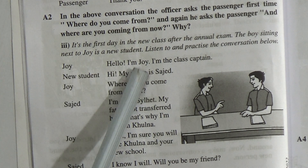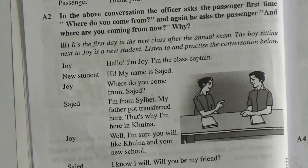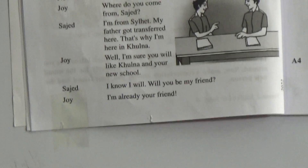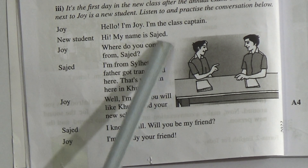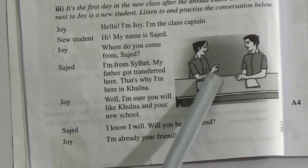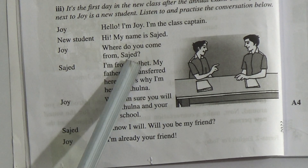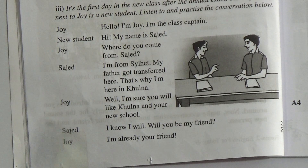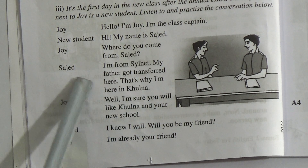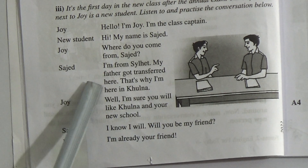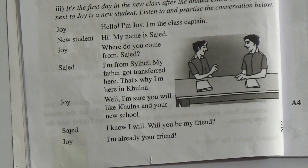Joy: Hello, I am Joy. I am the class captain. That means Joy was addressing the new student as the captain of his class. New student: Hi, my name is Sajid. The new student told Joy that his name is Sajid. Joy: Where do you come from, Sajid? That means from where Sajid came. Sajid: I am from — my father got transferred here. That's why I am here in Khulna. That means they are in Khulna right now.